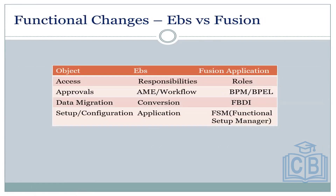Functional changes: in EBS we have responsibilities; in Fusion application we have roles. In EBS we have ANE and workflow; in Fusion application we have BPM and BPE. In EBS we have conversions; in Fusion application we have FBDI — File-Based Data Import for data migration, which means migrating data from a legacy system to Oracle application-based tables.